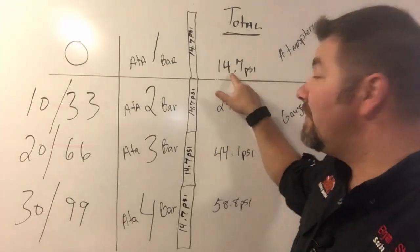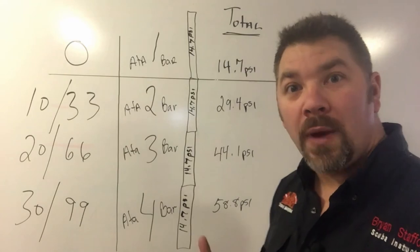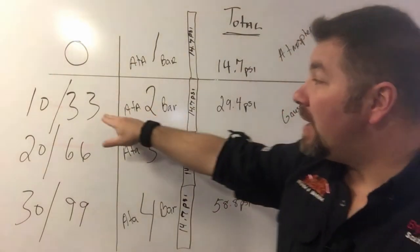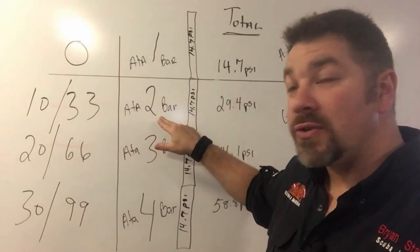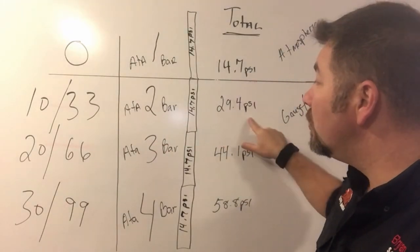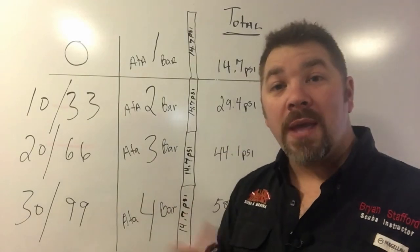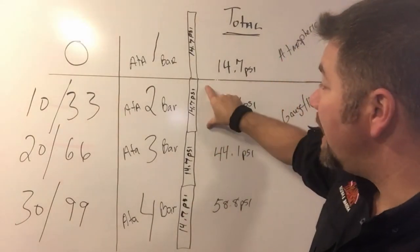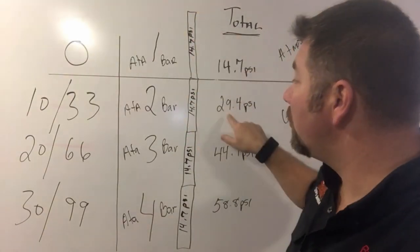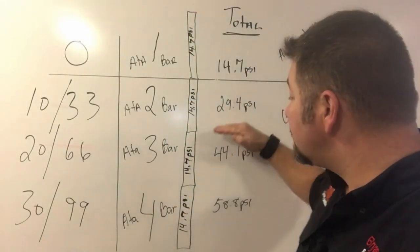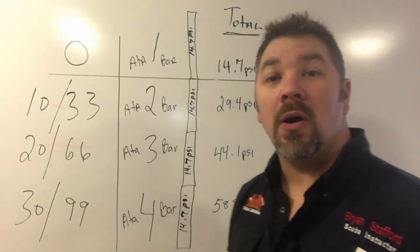At the surface, I have a total of 14.7 pounds per square inch pushing in on my body. At a depth of 10 meters or 33 feet — two atmospheres or two bars — I have a total of 29.4 psi pushing in on my body. That's the gauge pressure plus the atmospheric pressure at the surface making the total pressure of 29.4. And so forth — I can do it at three bar, four bar, five bar, and all the way down.